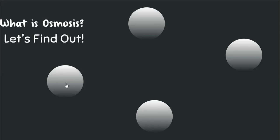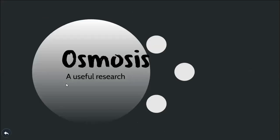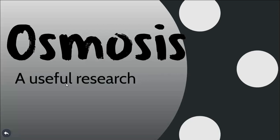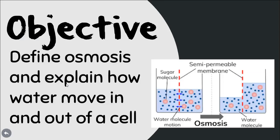So what is osmosis? Let's find out. The objective for today is to define osmosis and explain exactly how water moves in and out of a cell. We know that the cell is the minimum unit of life, with all the functions such as reproduction and respiration. By the end of this presentation, you will have identified the main steps of osmosis and how to conduct a little experiment.